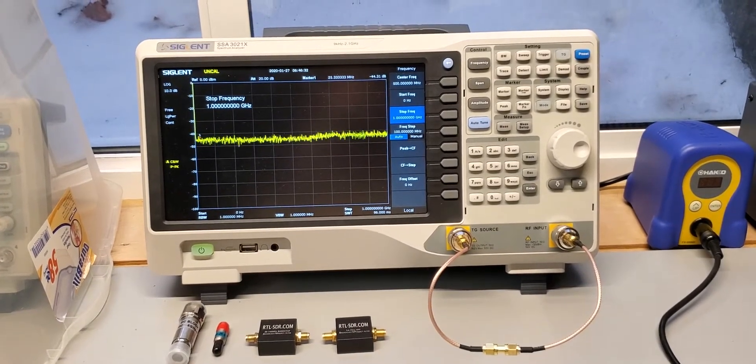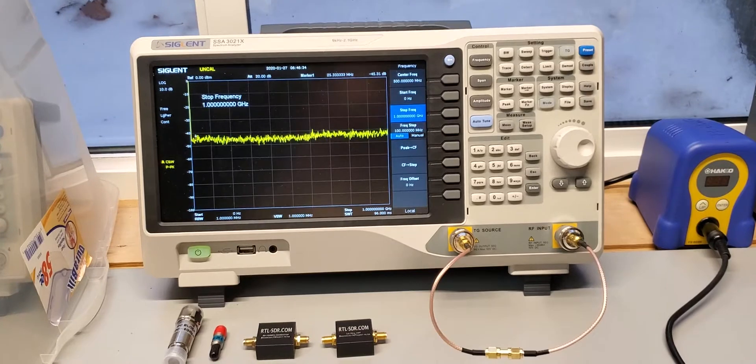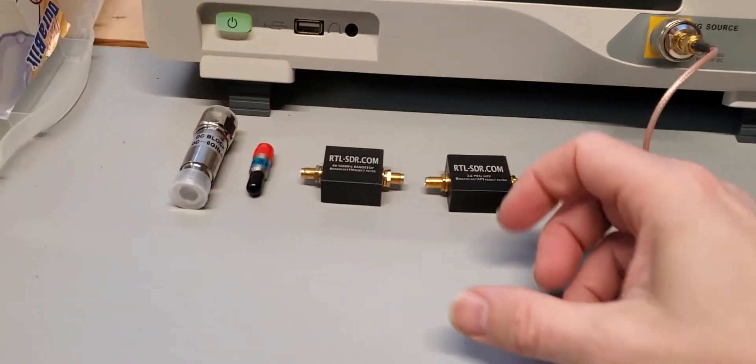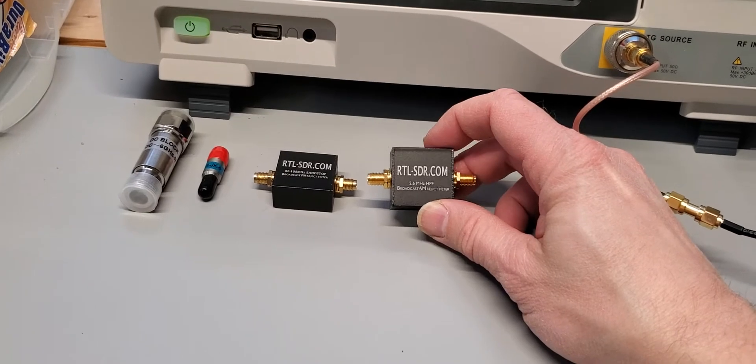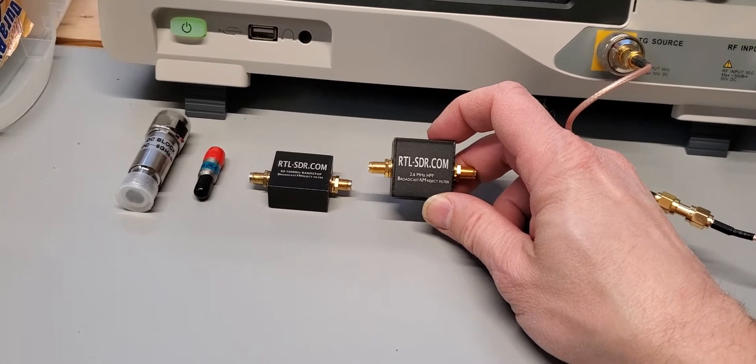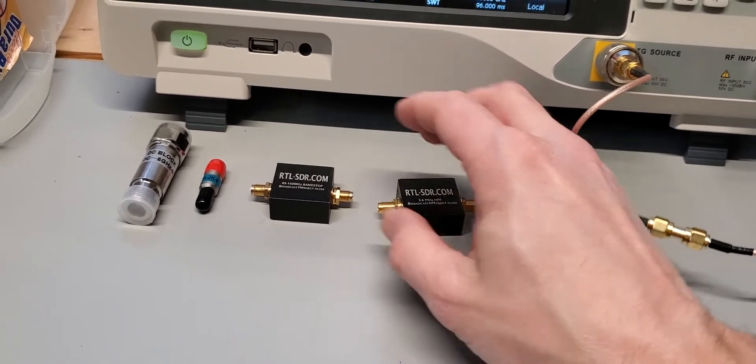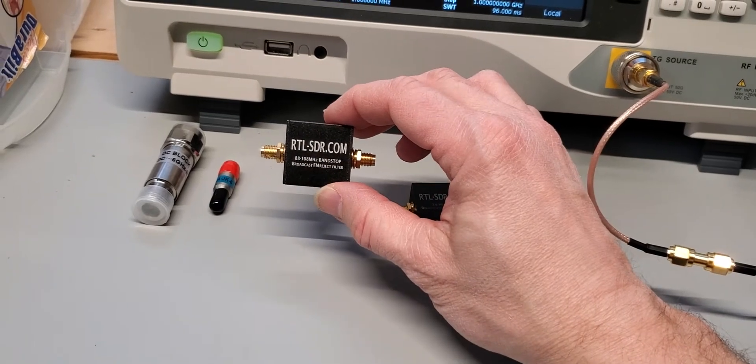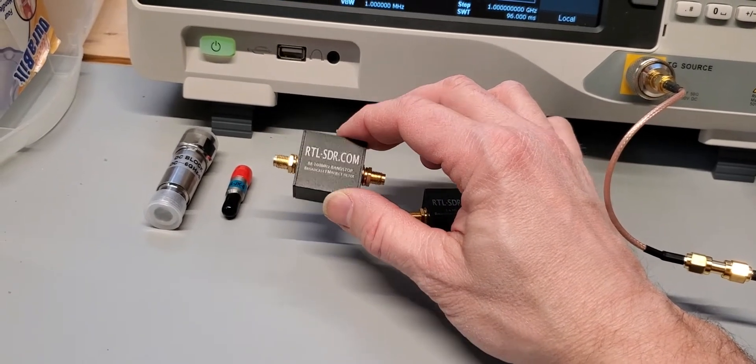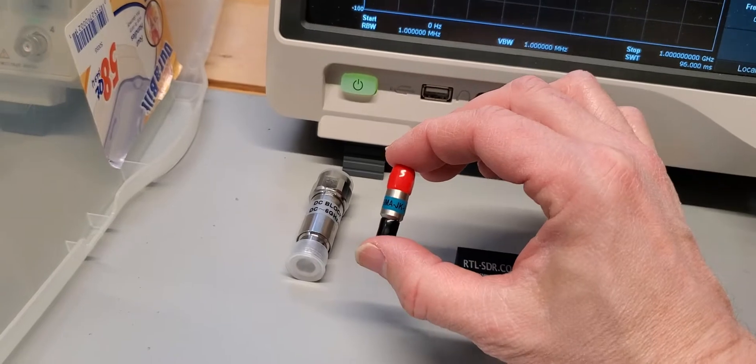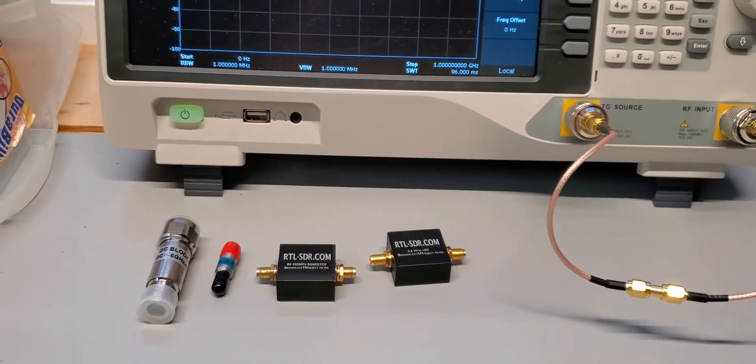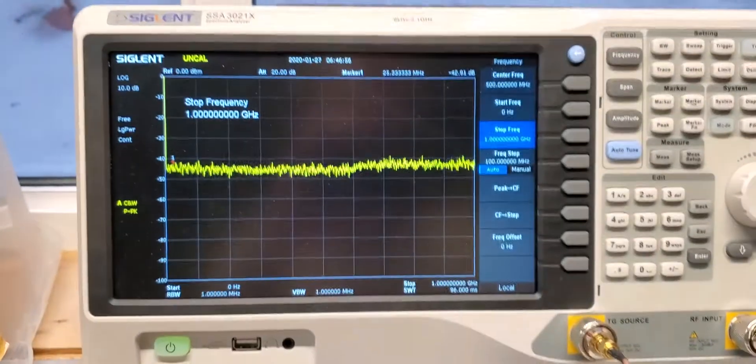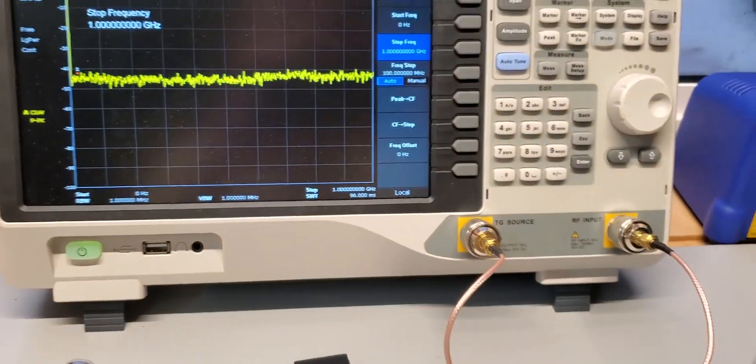I'm going to play around here with the spectrum analyzer looking at the two RTL-SDR filters. This one is the AM broadcast band reject filter and this one is the broadcast FM reject filter. I've also got two DC blocks that I'm going to put in line and see what that does to our frequency here.